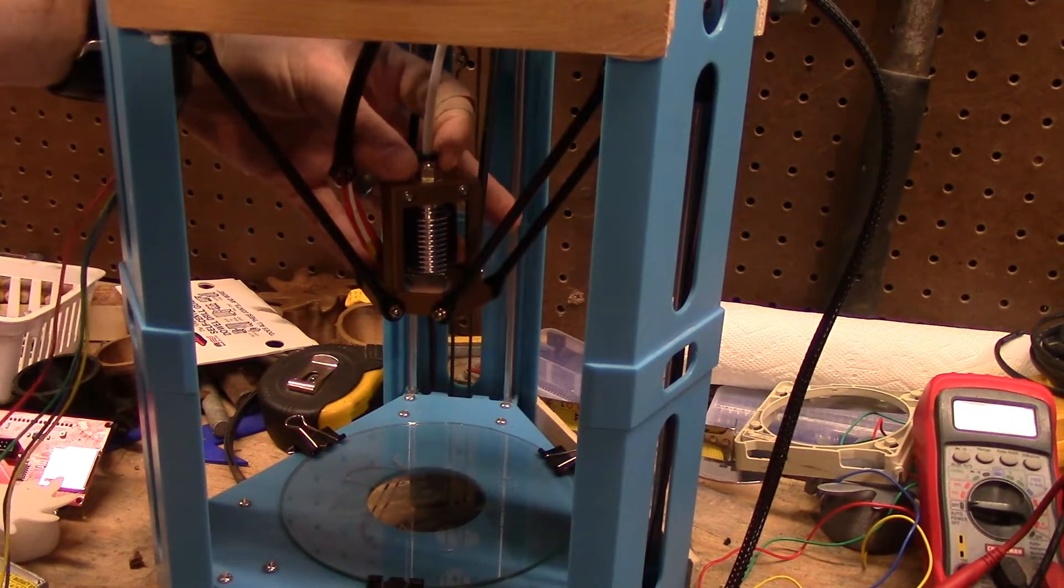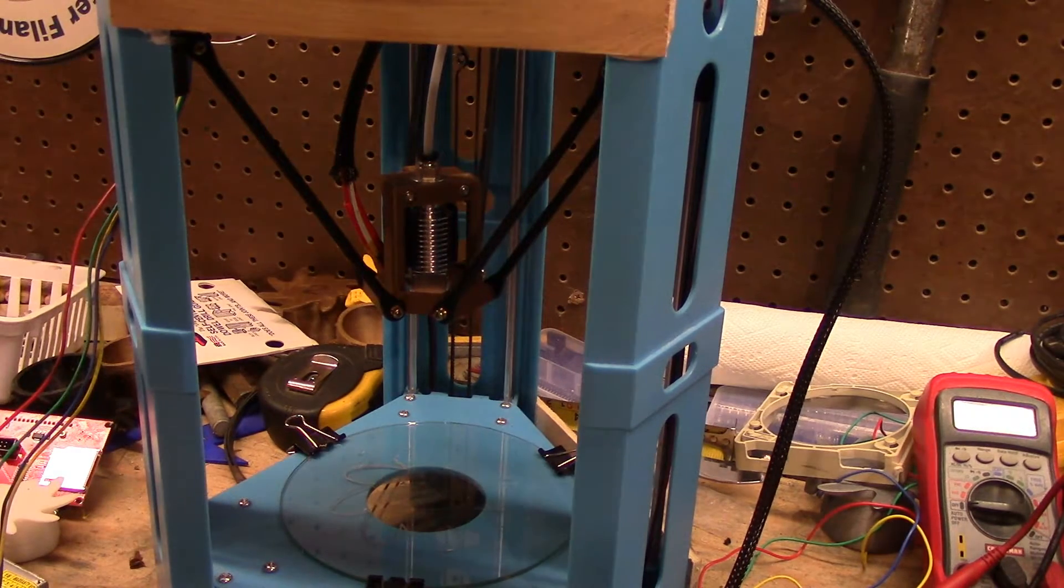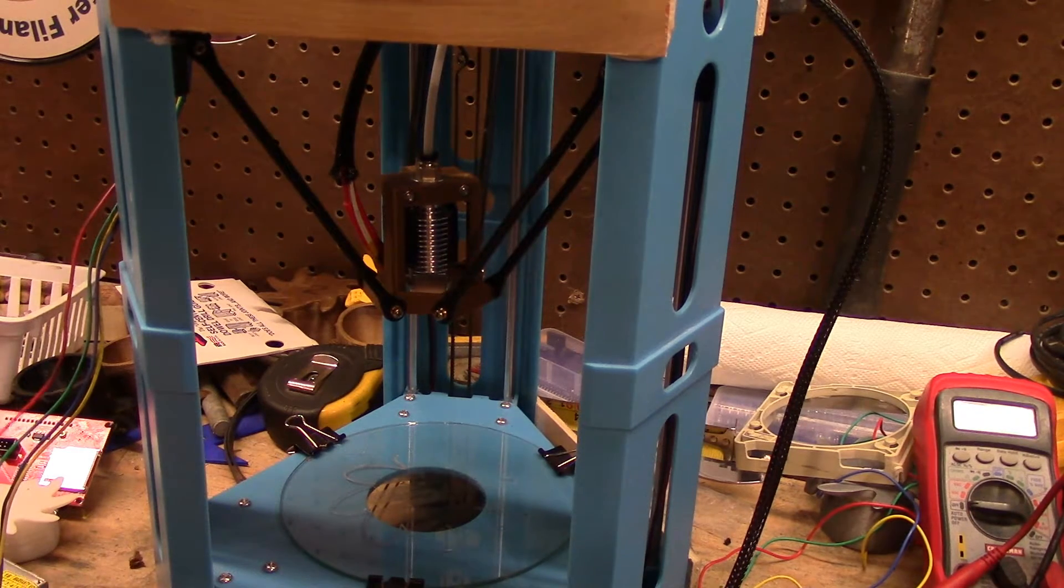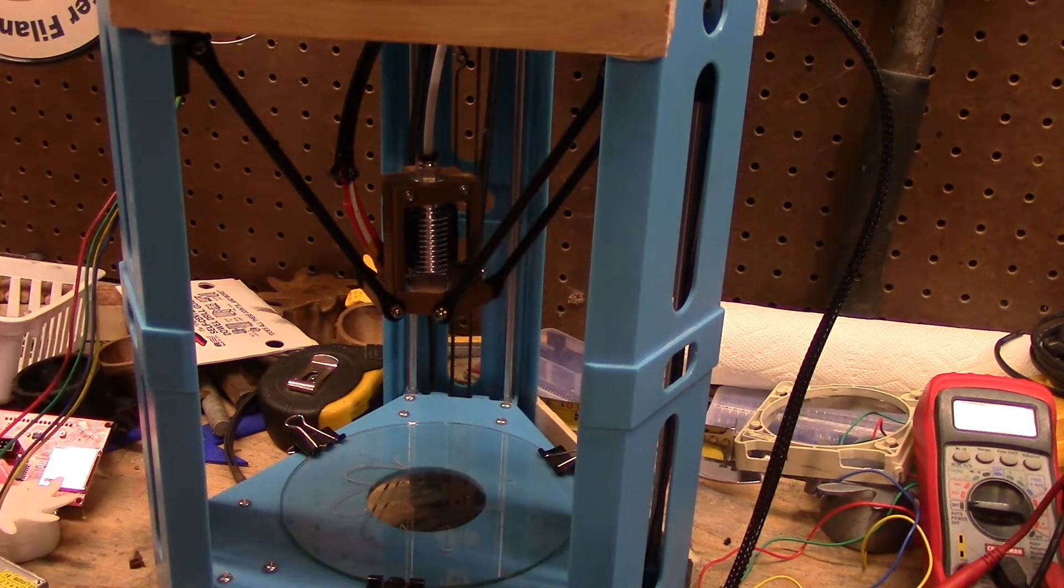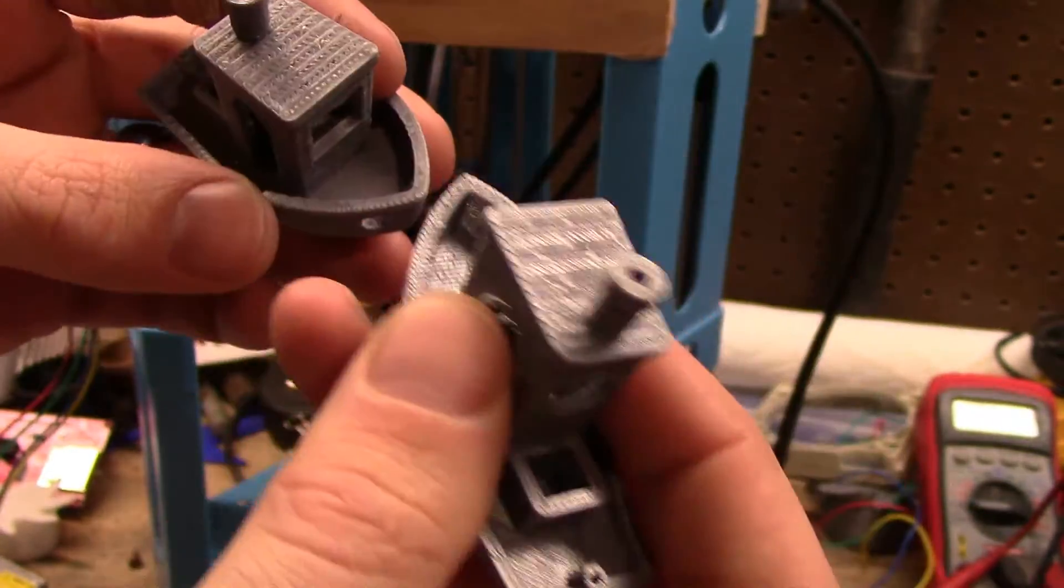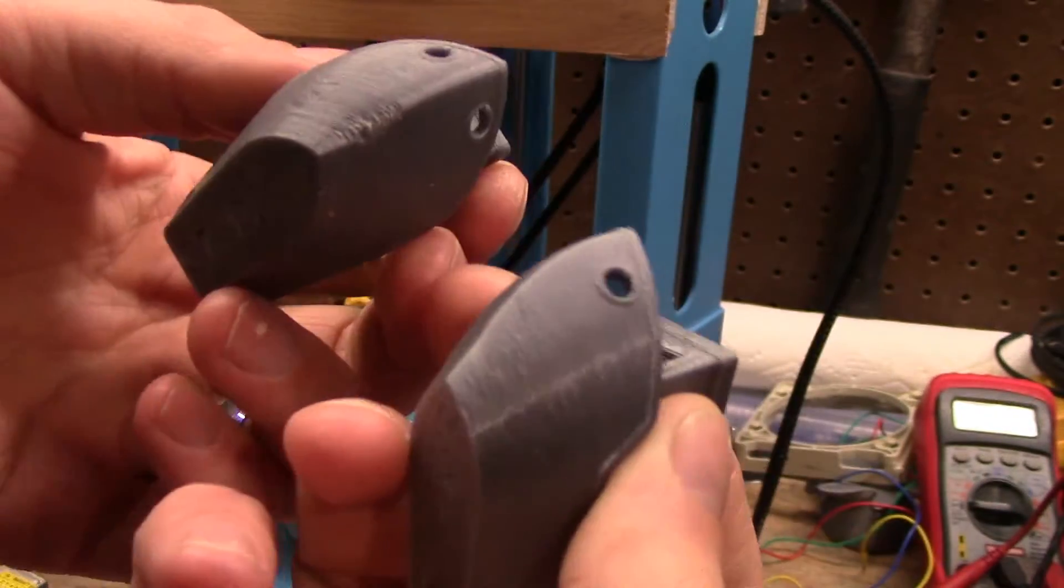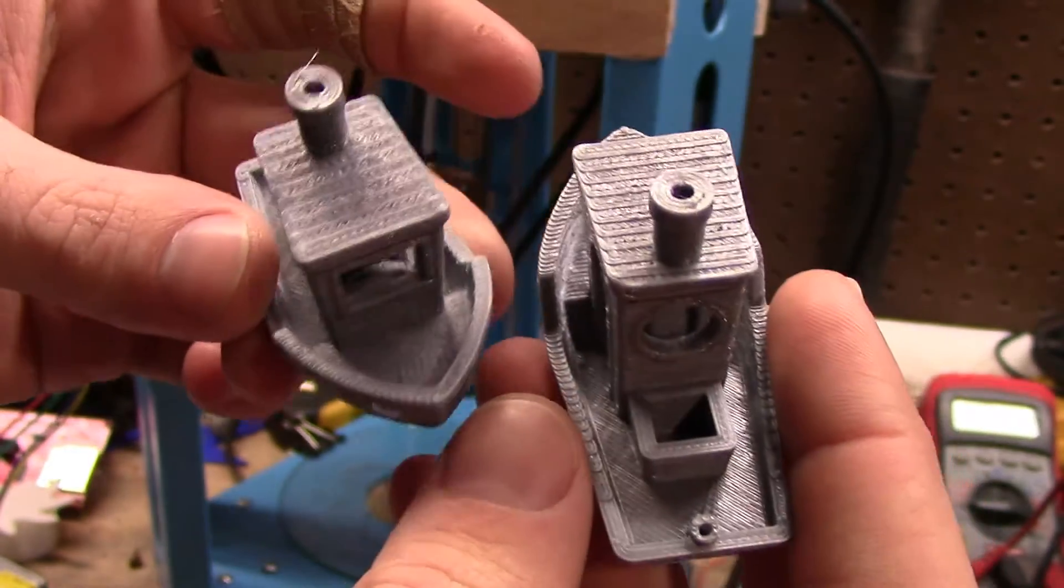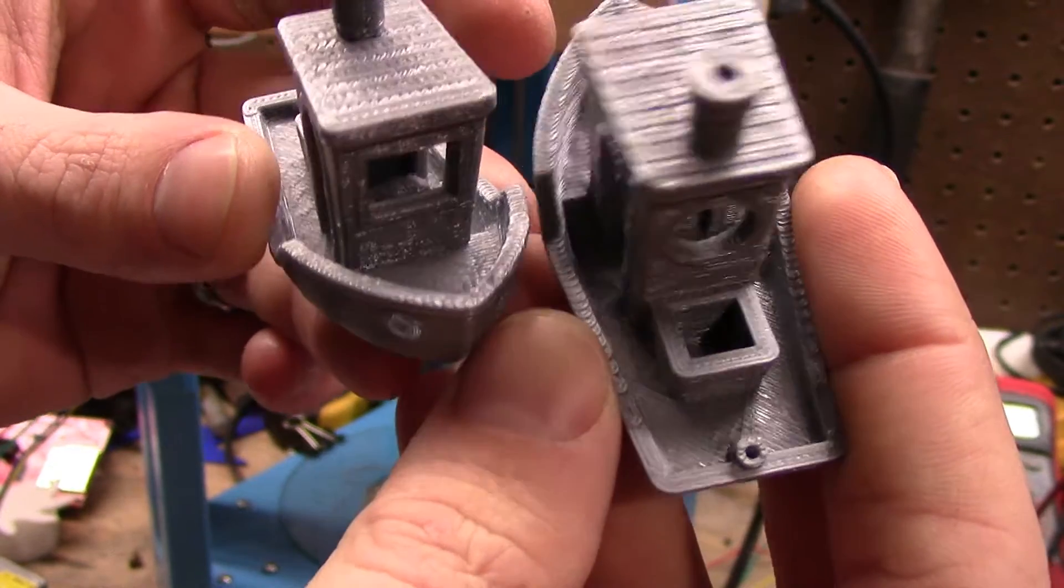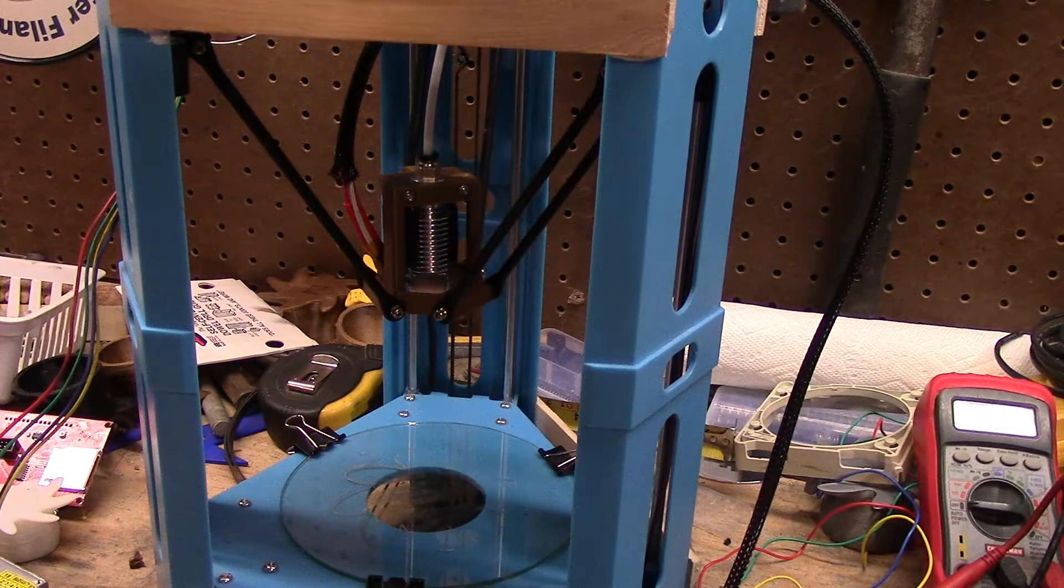The only thing that's really different is the Bowden coupler is actually a screw-in style instead of the nice easy push-to-fit thing that E3D likes to use. I've got a couple benches here. This one's with the E3D hotend, this one's with the non-E3D hotend, and actually the non-E3D came out better.